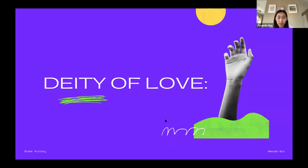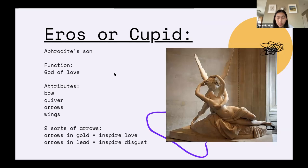Now we're going to talk about the deity of love — Eros, or Cupid. We normally think of Cupid as a baby with wings and heart arrows from Valentine's Day, but it's more complicated than that. Cupid is the god of love, and his attributes are the bow, the quiver, the arrows, and the wings. There are actually two sorts of arrows: arrows in gold inspire love — if Cupid shoots someone with a golden arrow, they fall in love with the first person they see. But if the arrows are in lead, they inspire disgust — the person will hate the first person they see. That's a common misconception a lot of people have.